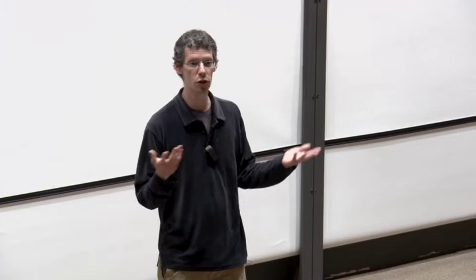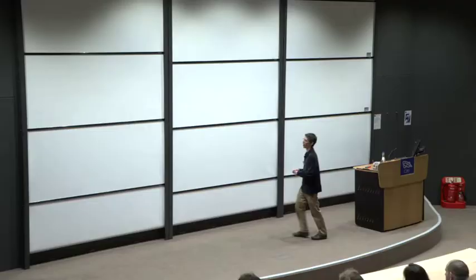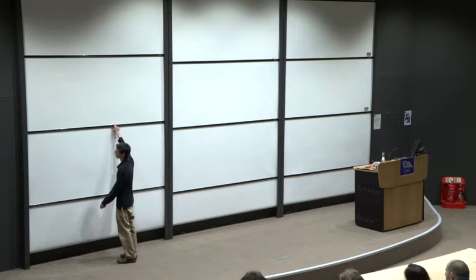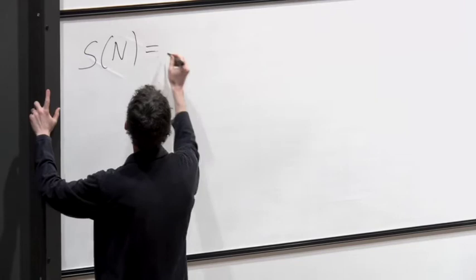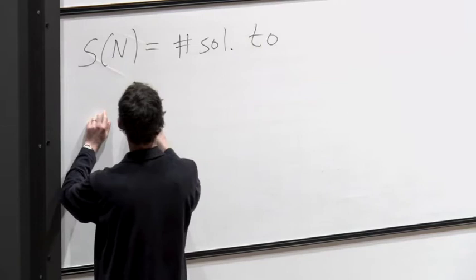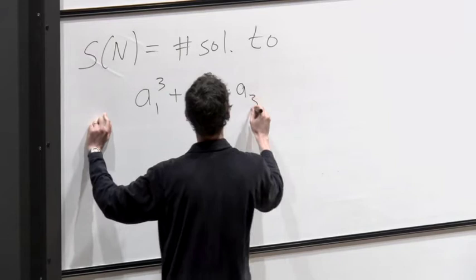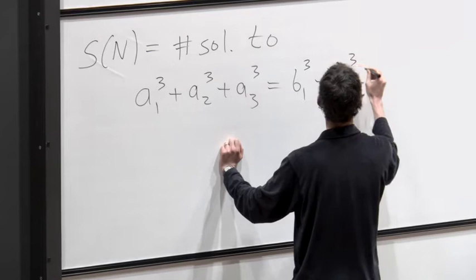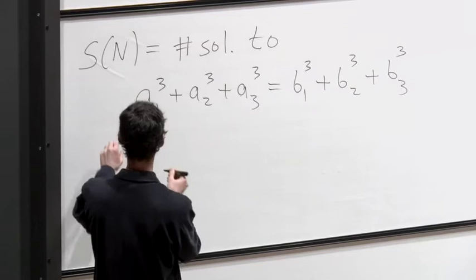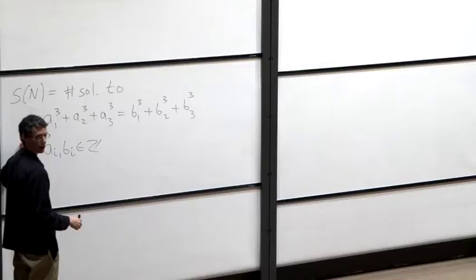I start by describing a problem about sums of three cubes. Let S(n) be the number of solutions to the equation a₁³ + a₂³ + a₃³ = b₁³ + b₂³ + b₃³, where the aᵢ and bᵢ are integers in the range between 1 and n.